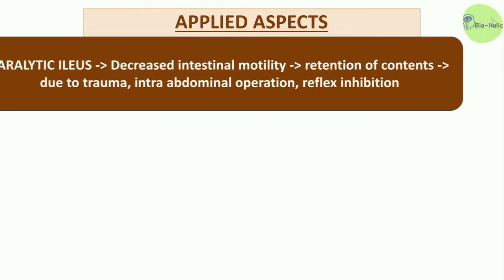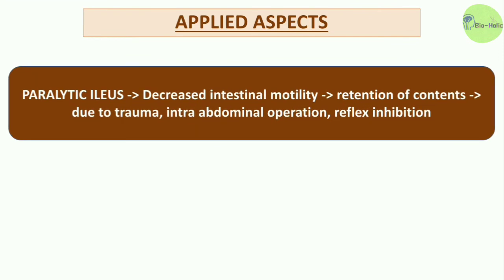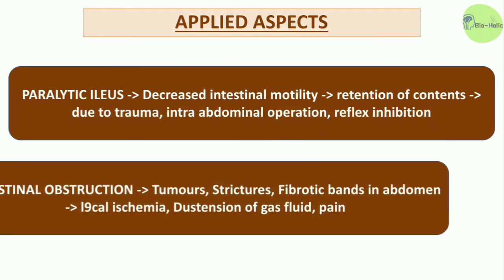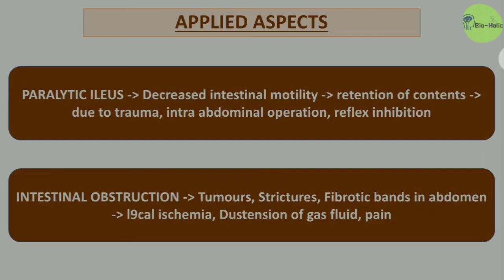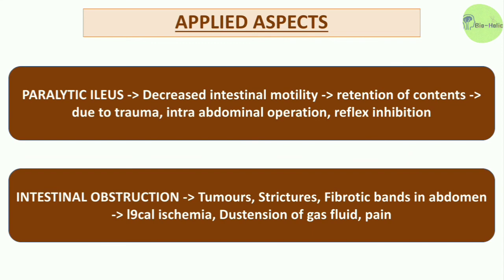The applied aspects: paralytic ileus involves decreased intestinal motility causing retention of contents in the small intestine, seen due to trauma, intra-abdominal operations, and reflex inhibition. Intestinal obstruction can be caused by tumors, strictures, and fibrotic bands in the abdomen, characterized by local ischemia, distension with gas and fluid, and abdominal pain.